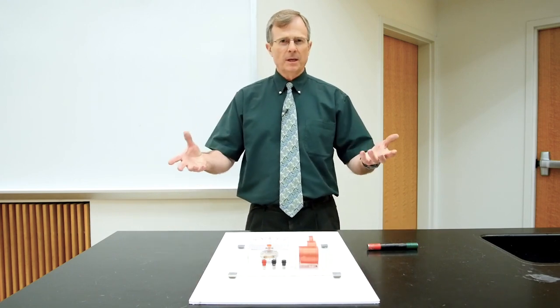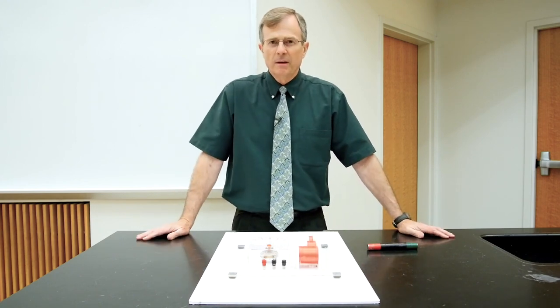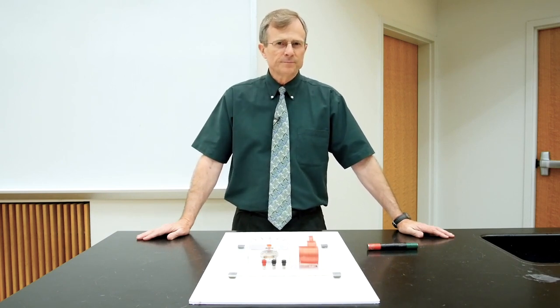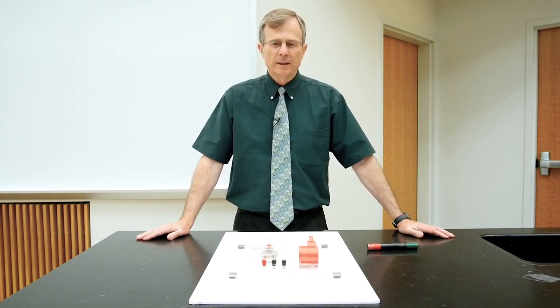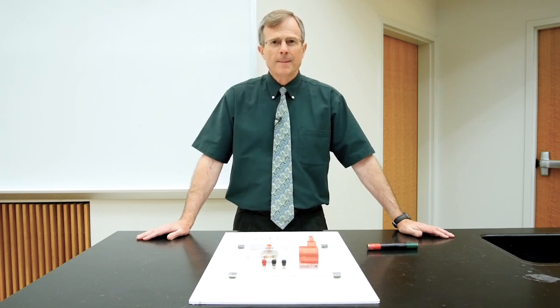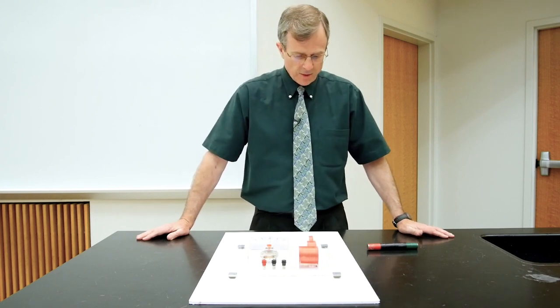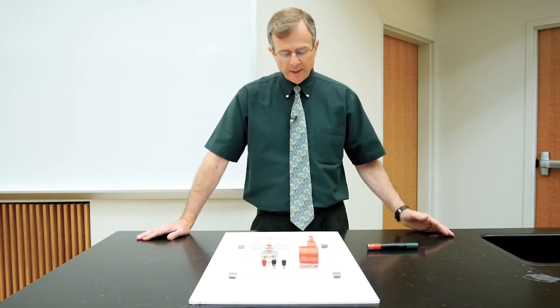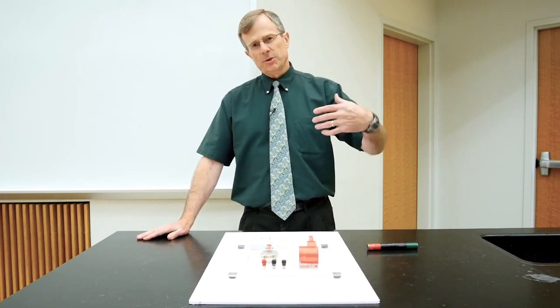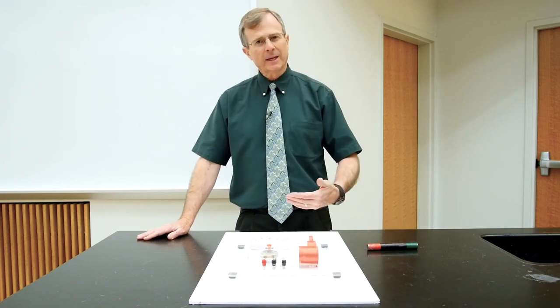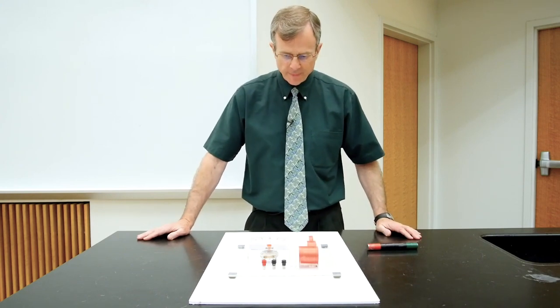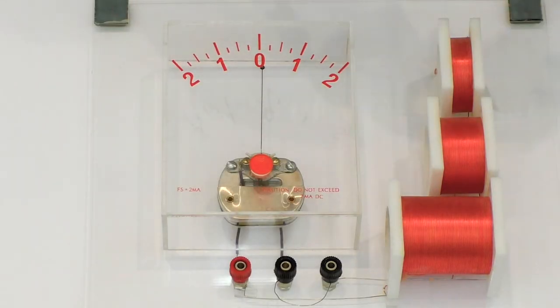This is not something that people come across every day, but it's the basic principle behind generators, the alternator in your car, etc. So we can generate electricity by changing the magnetic flux, the amount of magnetic field that penetrates a coil. So what I have here are three separate coils of wire, one with very few windings, one with about double the number of windings, and one with approximately quadruple the original number of windings of wire in this coil.